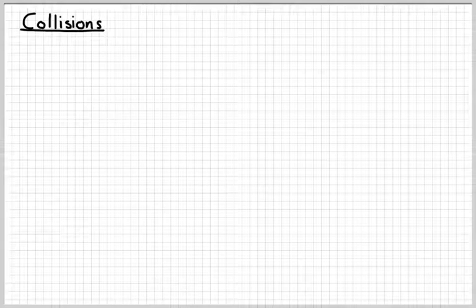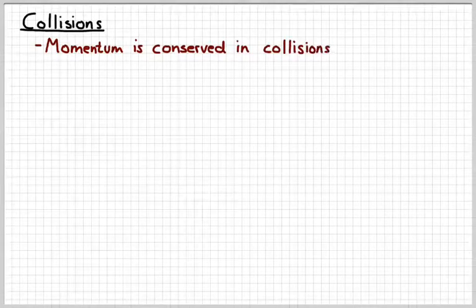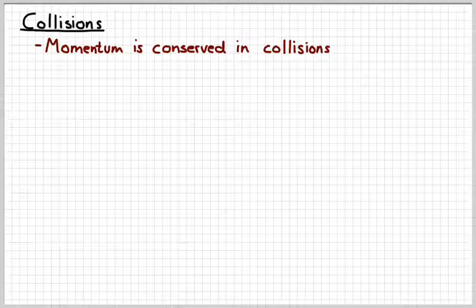Hello. In this video we're going to look at collisions in a more general sense. In our last video we looked at inelastic collisions, or sticky collisions. Now we want to look at the case when the objects break apart after a collision. In all collisions, momentum is conserved. We're going to consider these to be closed systems. If during a collision there's friction or another resistive force, it's not going to have enough time to exert a very big impulse because collisions happen very, very quickly.